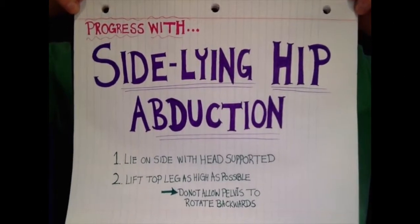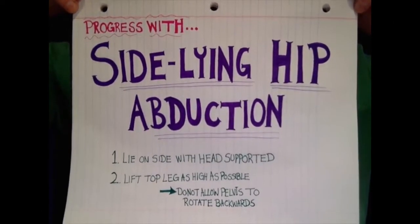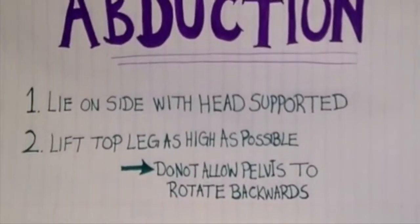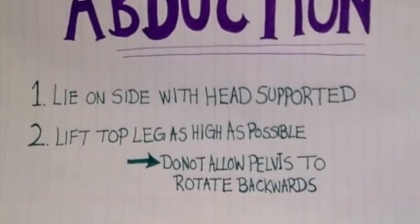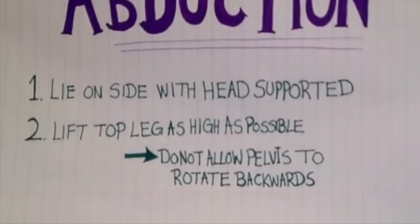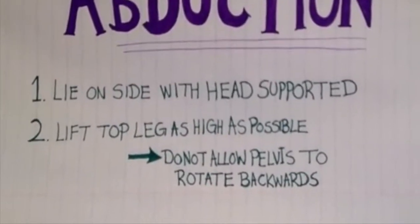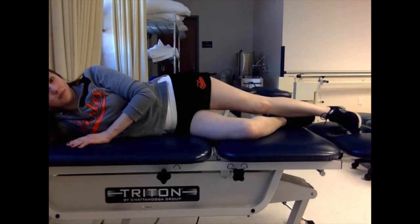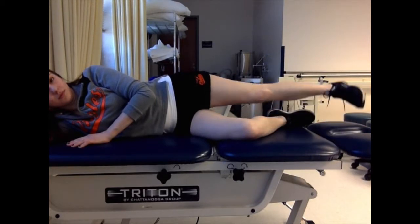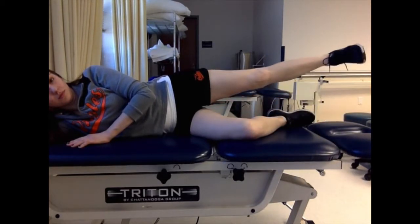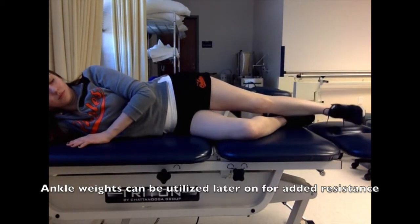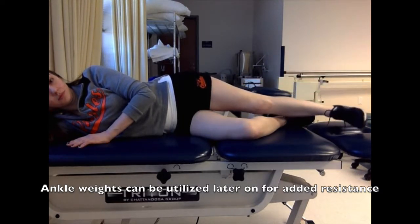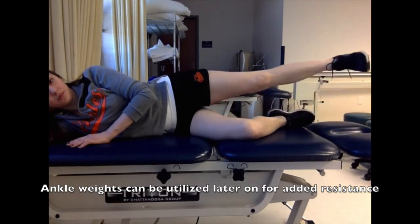If a patient has 3 out of 5 strength, they can also perform hip abduction in a sidelying position. Patients will lay on their side with their head supported, with both legs stacked on top of each other. The patient will then raise the superior leg as high as possible without allowing their pelvis to rotate backwards.